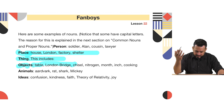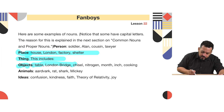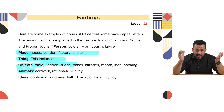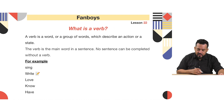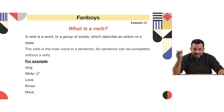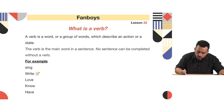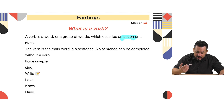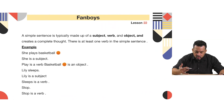Nouns can also include things like nitrogen, month, inch, and so on. It could be an animal — a rat, a shark, a mouse. It could be an idea — confusion, kindness, faith. Now, what is a verb in the English language? A verb is an action — a word or group of words that describes an action. Examples include: sing, write, love, know, have.